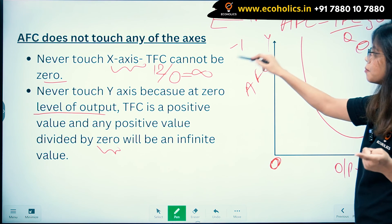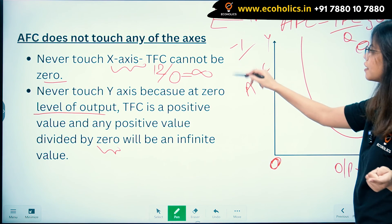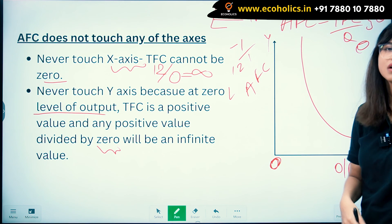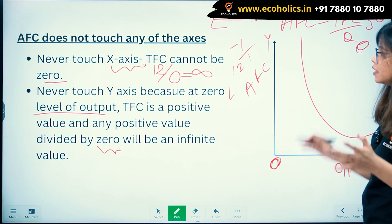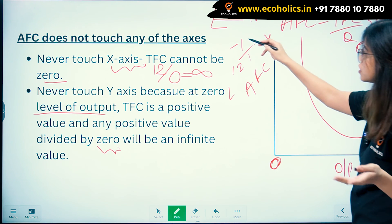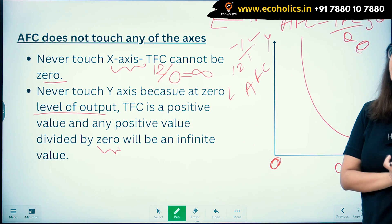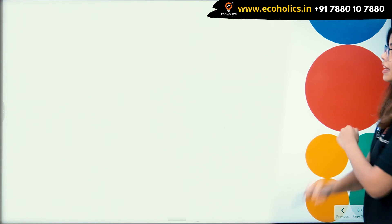TFC cannot be negative — it is always a positive value, such as 12, 1, or 2 — never minus. Any positive number divided by zero always gives an infinite value. So AFC never touches either axis. I hope average fixed cost is now clear to all of you.